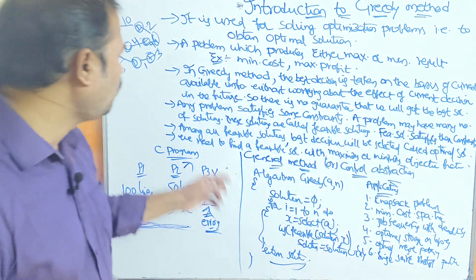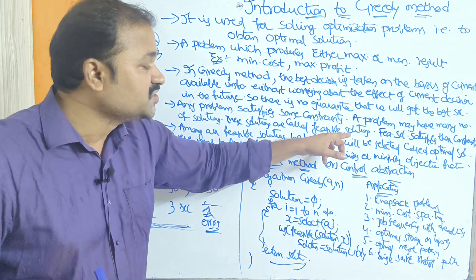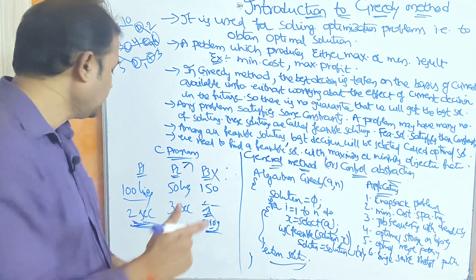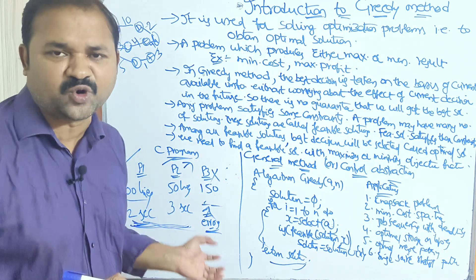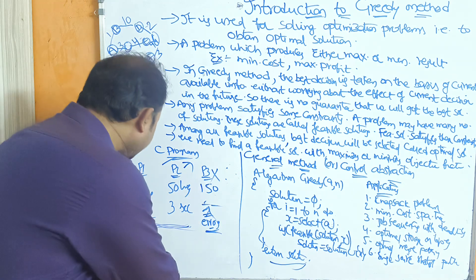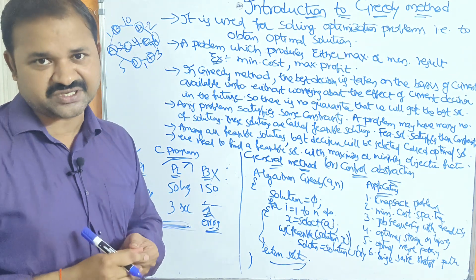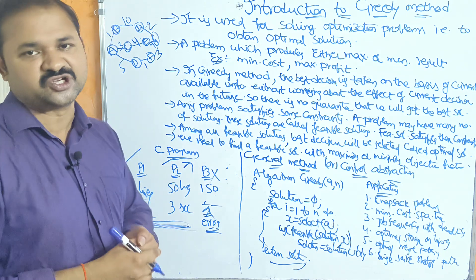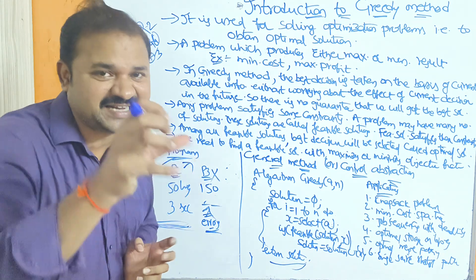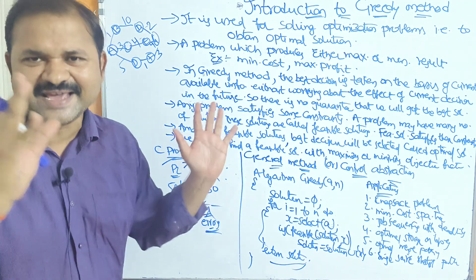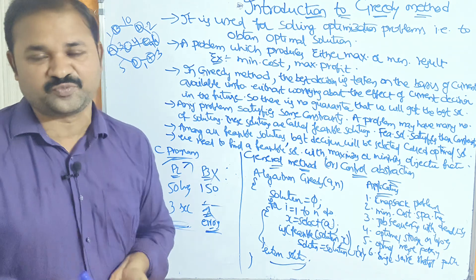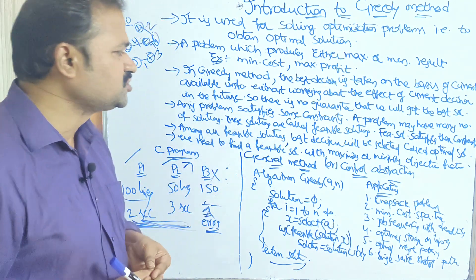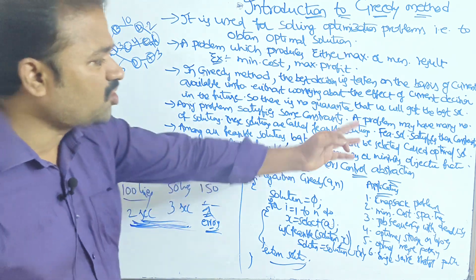A problem may have many solutions; these solutions are called feasible solutions. A feasible solution satisfies the constraints. In our example, only P1's and P2's programs execute correctly, so these two are the feasible solutions. A feasible solution must satisfy the constraints — no errors and correct output. Among all the feasible solutions, the best decision is selected, which is called the optimal solution.